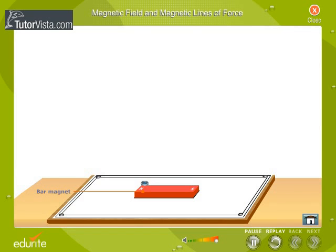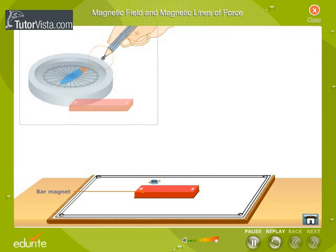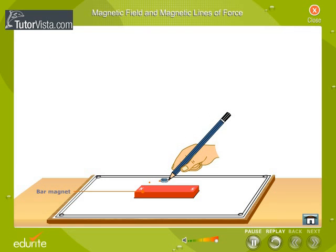What do you observe? The magnetic needle comes to rest in a particular direction. Mark the other end of the needle as shown here. Now move the magnetic needle in such a way that its south pole is where its north pole was. Mark the new position of its north pole.